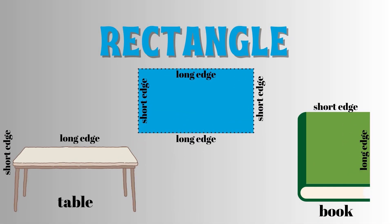Our first shape is the rectangle. A rectangle is a shape with four corners and four sides. It has long sides and short sides. For example, objects like a table or a book can be in the shape of a rectangle.